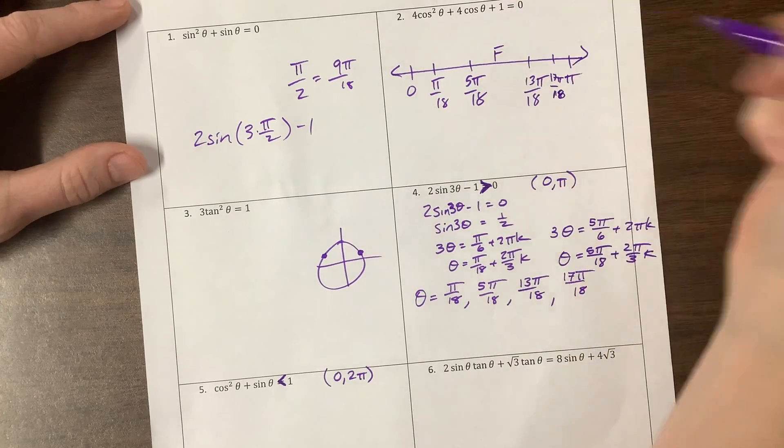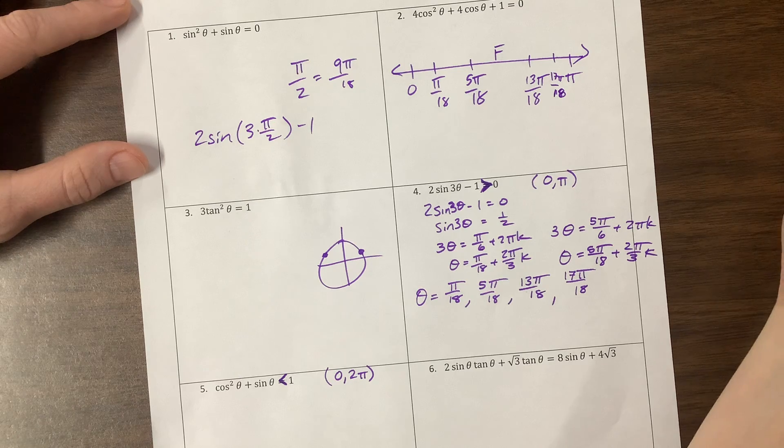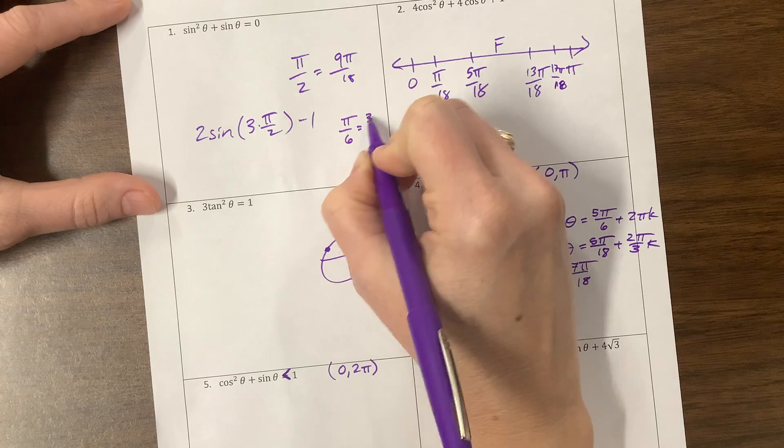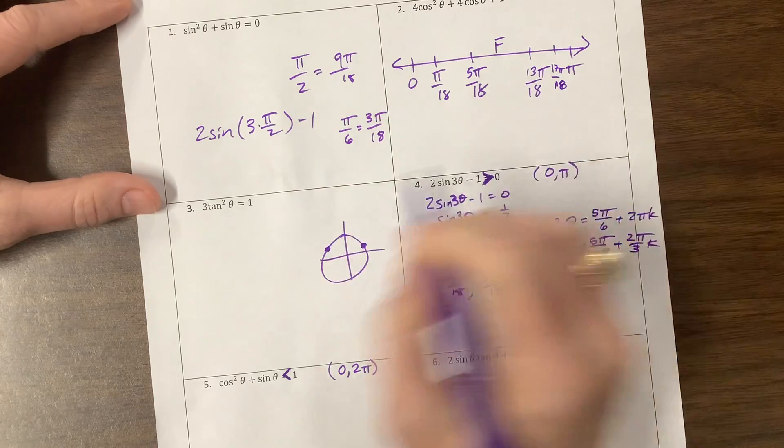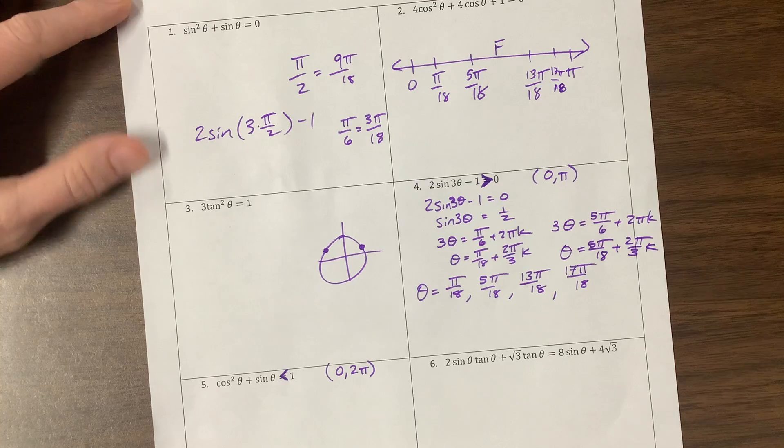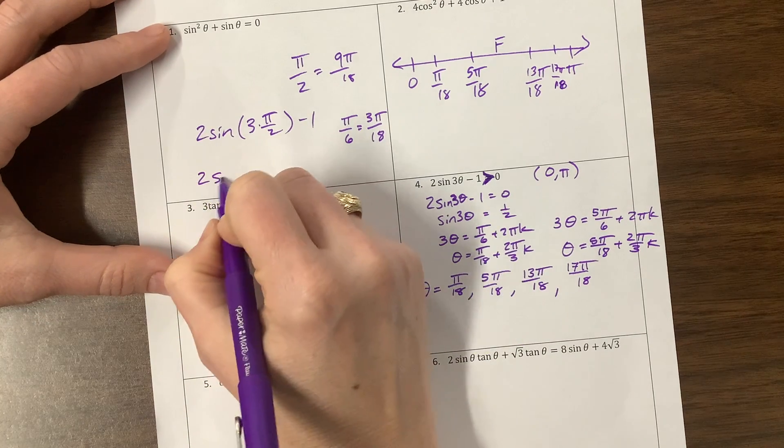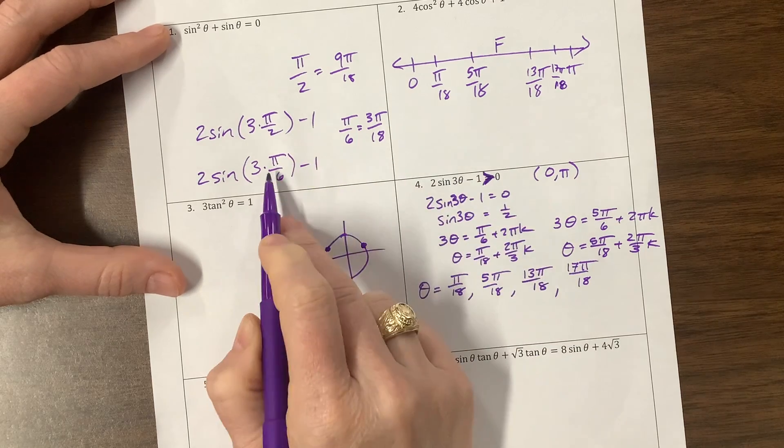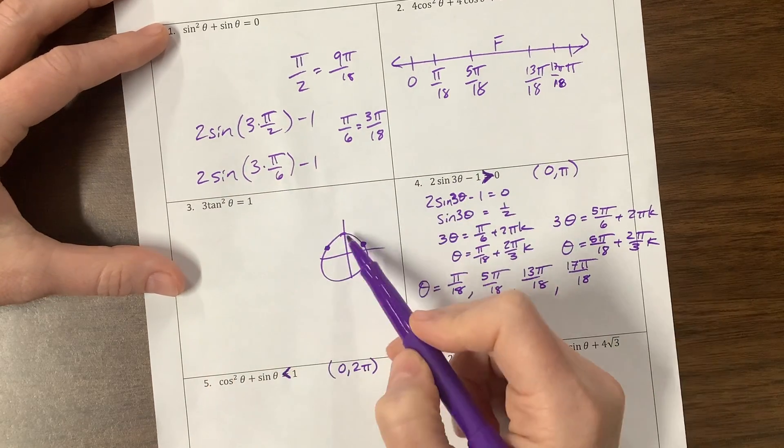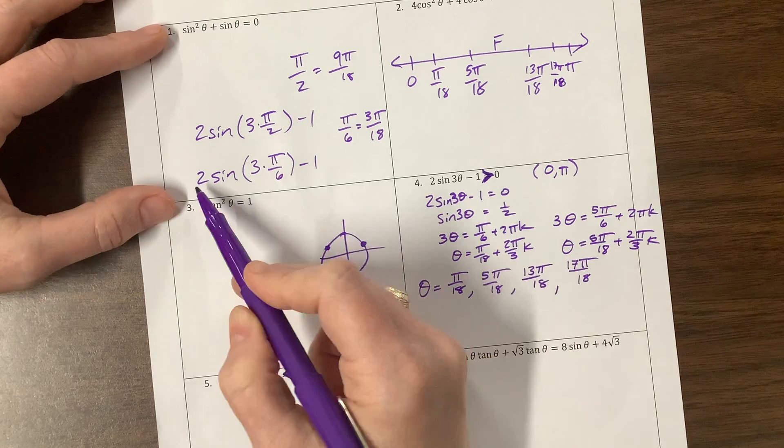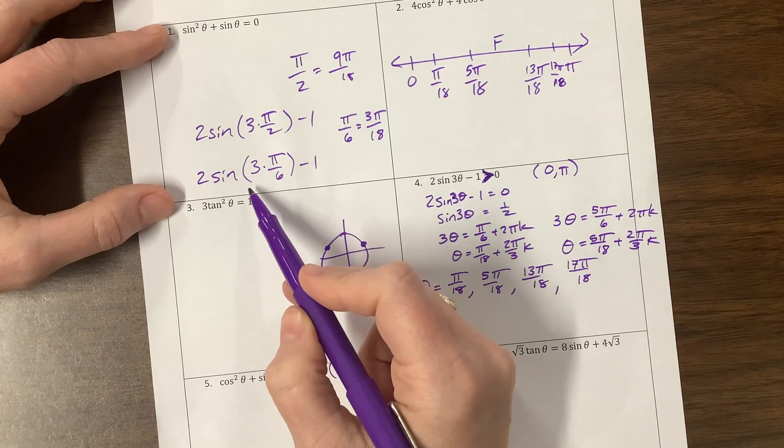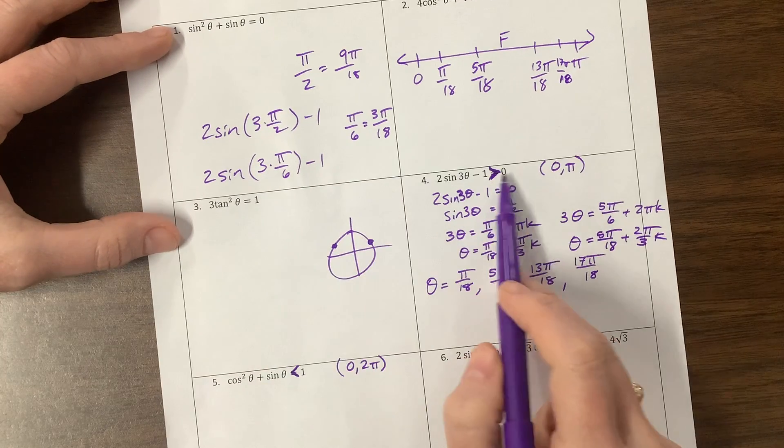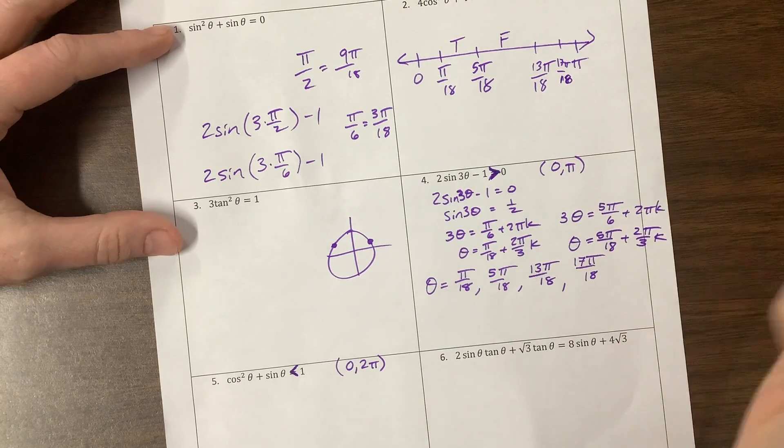What's something in between these? Let's see, if I have pi over 6, where does that fall? That's 3 pi over 18. Yes, and that's somewhere in here. Okay, so let's try pi over 6. So 2 sine of 3 times pi over 6 minus 1. Pi over 6 times 3 is pi over 2. Sine of pi over 2 is up here. That's a 1. 2 times 1 is, I lied, 2 times 1 is 2 minus 1 is 1. 1 is greater than 0. So this is a true statement.